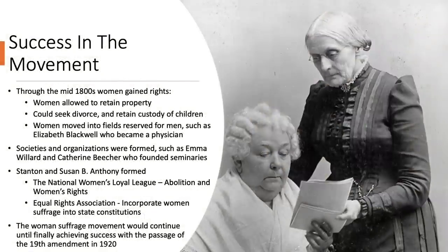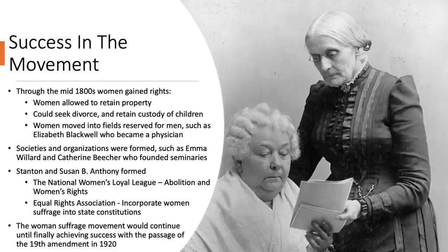Over the mid-1800s, women successfully gained the right to own and retain property, seek divorces, and retain custody of their children. Women moved into fields reserved for men, such as Elizabeth Blackwell who became a physician. Others formed societies and organizations, such as Emma Willard and Catherine Beecher who founded seminaries, and Elizabeth Cady Stanton and Susan B. Anthony who formed the National Women's Loyalty League combining issues of abolition and suffrage, and later the Equal Rights Association working to incorporate women's suffrage into state constitutions. The women's suffrage movement would continue until achieving success with the 19th Amendment in 1920.